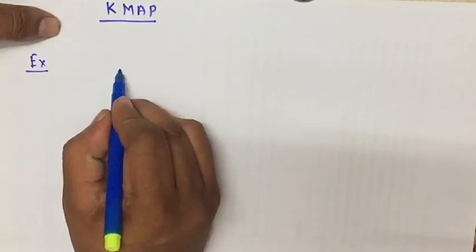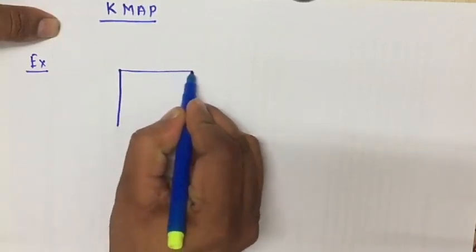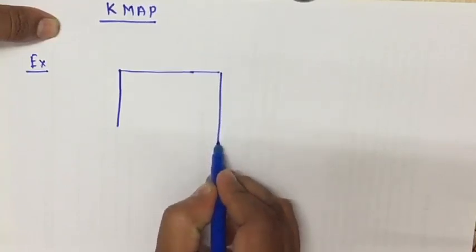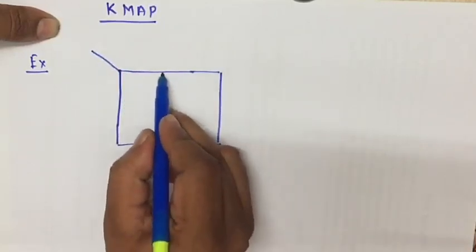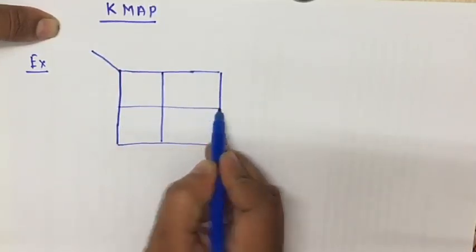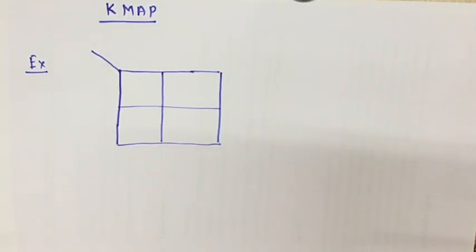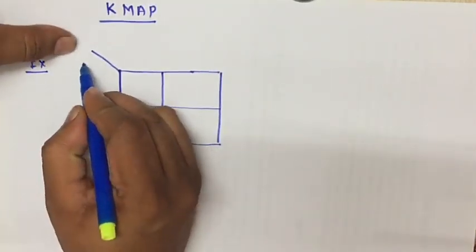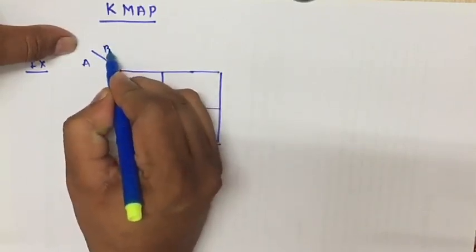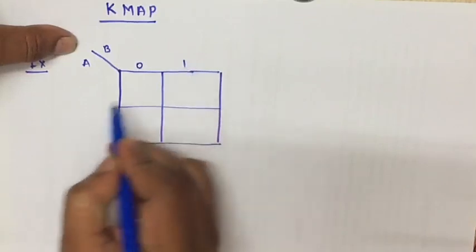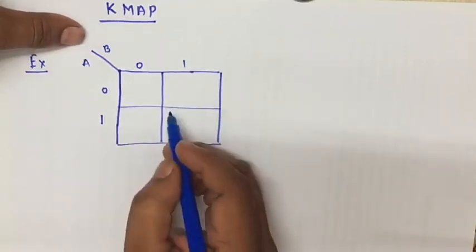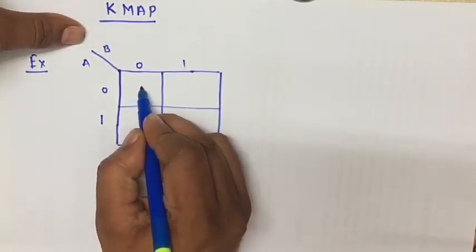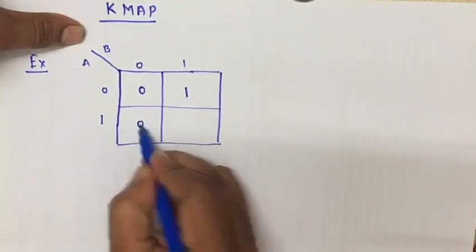Let us take one example — consider the case of two variables. I will draw the K-map for two variables. For a two-variable K-map we need four square boxes. We indicate the inputs as A and B, with values 0 and 1 on each axis. Now let us take some random values: suppose we write 0, 1, 0, 1 in the four cells.